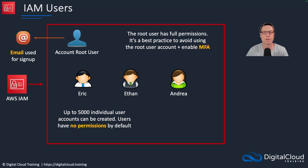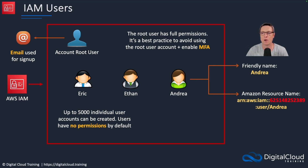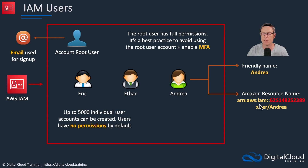If you create a user account, that user can log in if you enable management console access, but they can't do anything at all unless you specifically apply permissions to them. Here we have a user called Andrea. When she logs in she will use her friendly name, which is just a simple text string — in this case, Andrea. For every resource in AWS there's an Amazon Resource Name, or ARN. The text in red is the account number. It identifies it as an AWS IAM resource, shows the account number, the resource type as a user, and then the friendly name Andrea — a unique identifier for that resource within AWS.